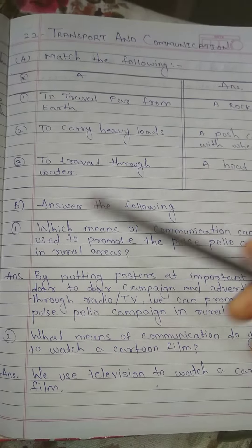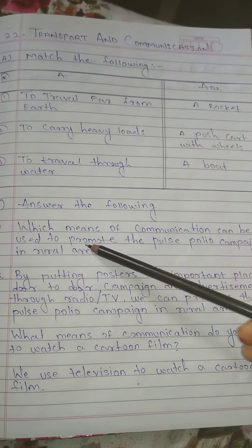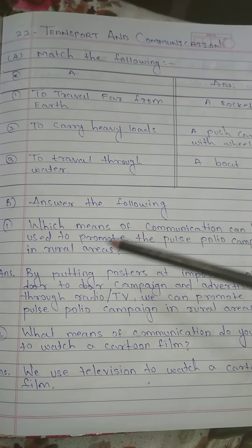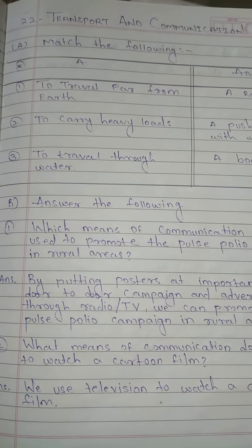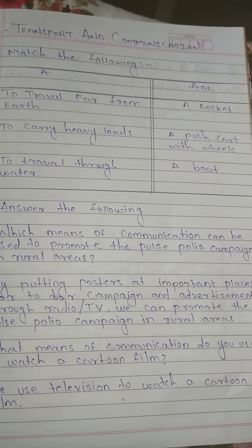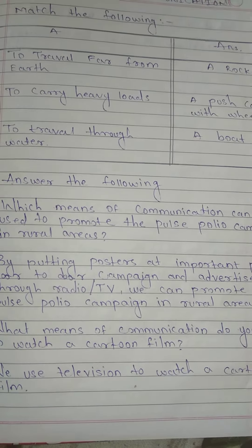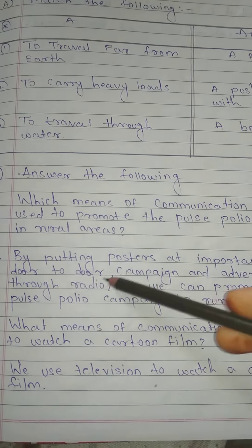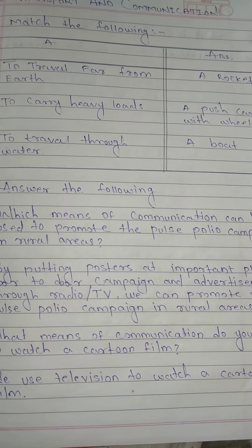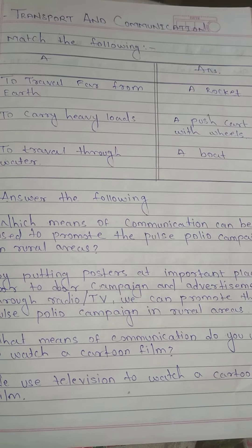B. Answer the following. Question 1: Which means of communication can be used to promote the pulse polio campaign in rural areas? Answer: By putting posters at important places, door-to-door campaign, and advertisement through radio and TV.